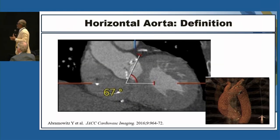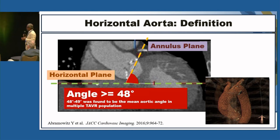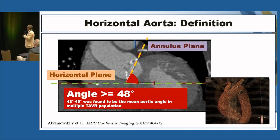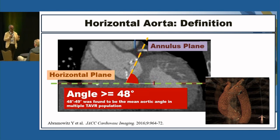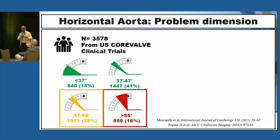Problem definition. What is horizontal aorta in the TAVR setting? By convention, we use this definition: it is the angle between the horizontal angle and the annular plane. When this angle is 48 degrees or more, we talk about horizontal aorta. This is why in literature we have this 48-degree angle — because this is the mean value of a TAVR-treated population. Even though this is not a median value, it's just a mean.